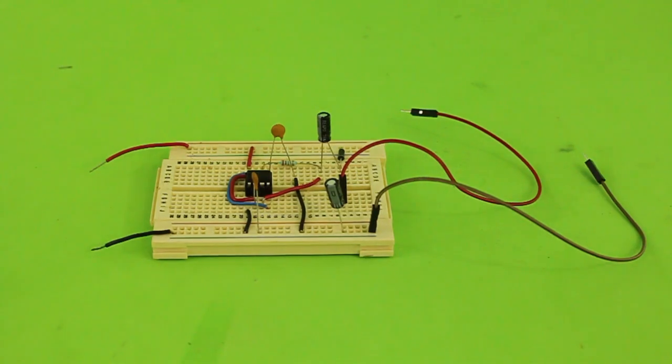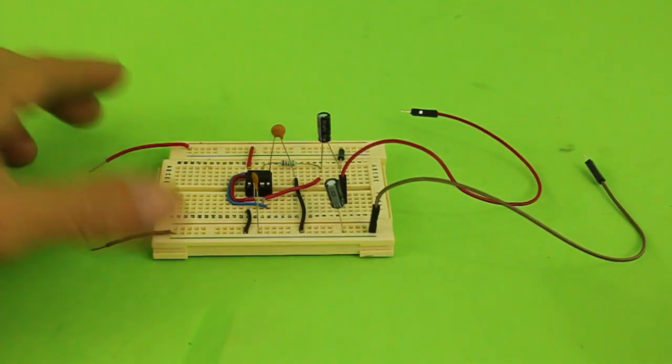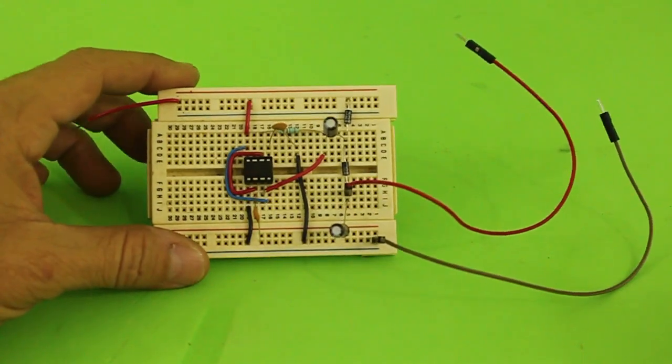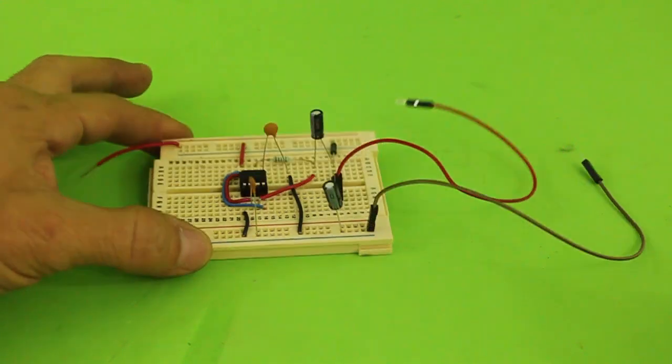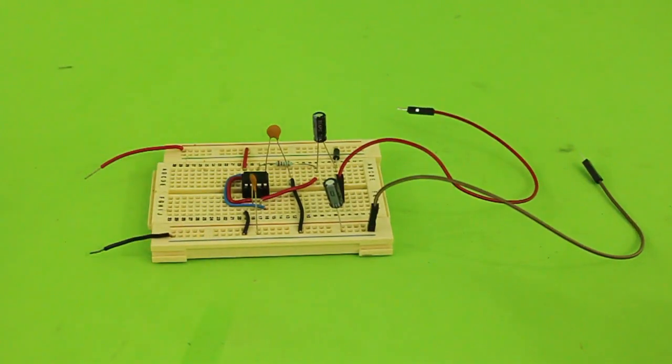Hello, welcome to LudicScience. Today I will show you this DC to DC voltage doubler which is based on a 555 timer and a Villard cascade multiplier.